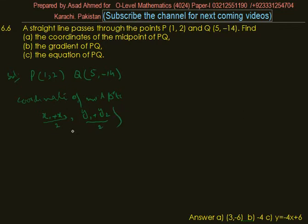So x₁ is 1 plus x₂ is 5 divided by 2, and y₁ is 2 plus y₂ is -14, so we write -14 divided by 2. This gives us 6 divided by 2 and -12 divided by 2.